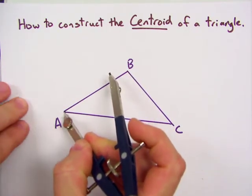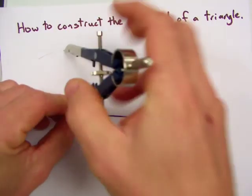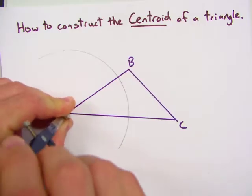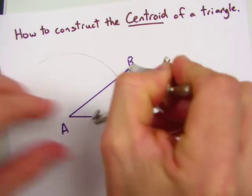So you open your compass to more than half the distance and draw one arc there. And then using the same compass measure from point B, we draw the same arc.